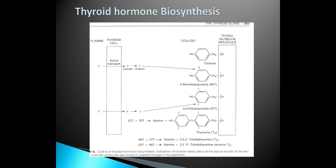Thyroglobulin is an essential molecule. As you can see, it is a glycoprotein molecule secreted into the follicles of the thyroid gland. It is produced by the endoplasmic reticulum and Golgi apparatus of the thyroid acinar cells. It has two subunits with a molecular weight of 660,000. It contains 123 tyrosine residues, of which only 4 to 8 are incorporated into thyroid hormone. The thyroid hormones are found within the thyroglobulin and are bound to it until secretion.